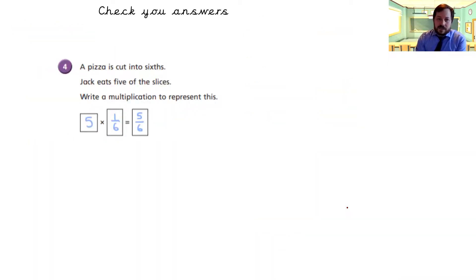And the last one, Joseph cuts into, pizza is cut into sixths, he eats five slices. Write the multiplication that represents this, which is five times one-sixth, which is five-sixths of a pizza. He almost ate an entire pizza, the pig.